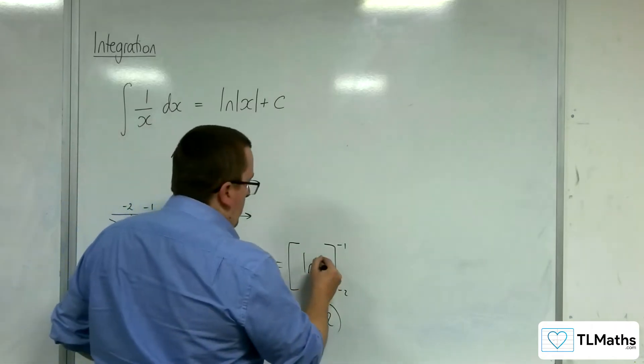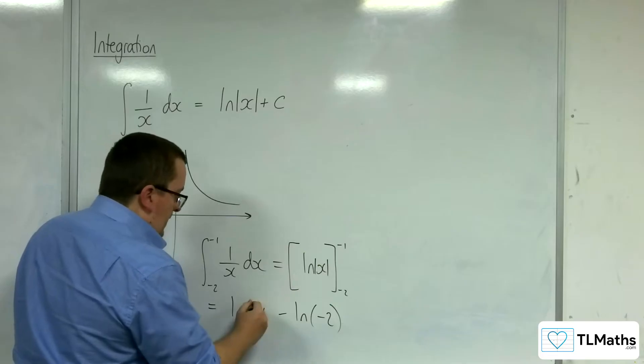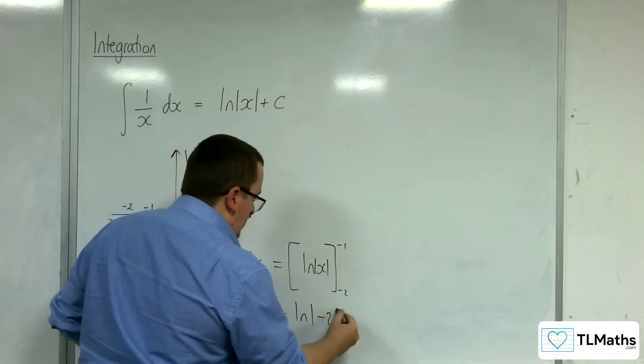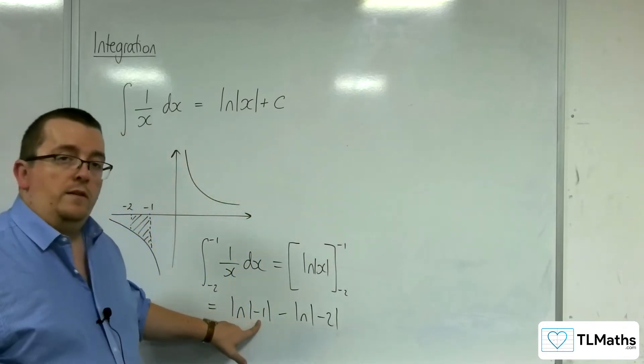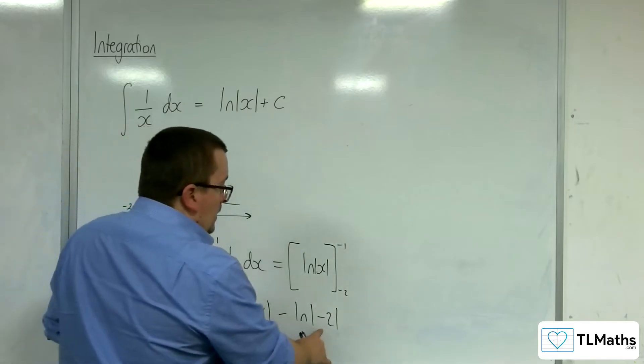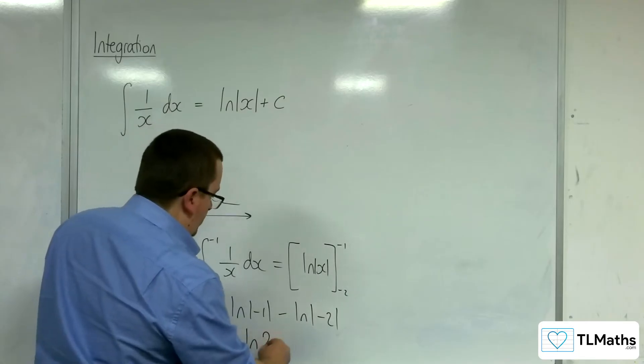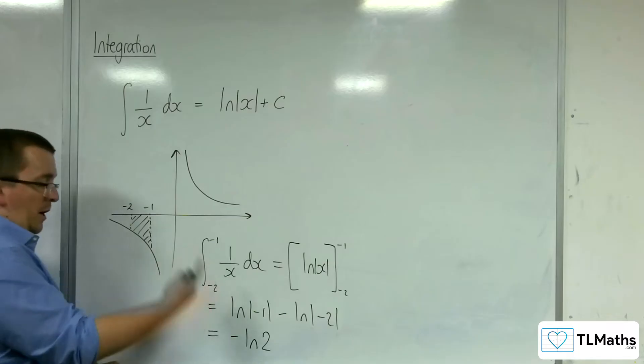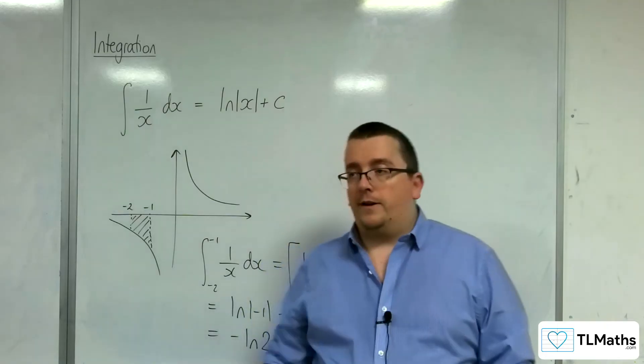And so to get around that, to allow this to work, if we put modular signs around this, then it all makes everything nice. Because now I've got log of negative 1 modded, minus 1 modulus of that is 1, log of 1 is 0. And here we've just got log of 2, so negative log of 2. So the area will be natural log of 2. The integral is minus ln of 2. And so that's why the modulus signs work.